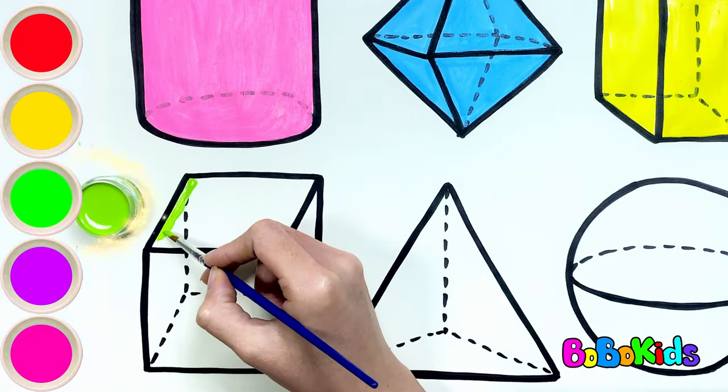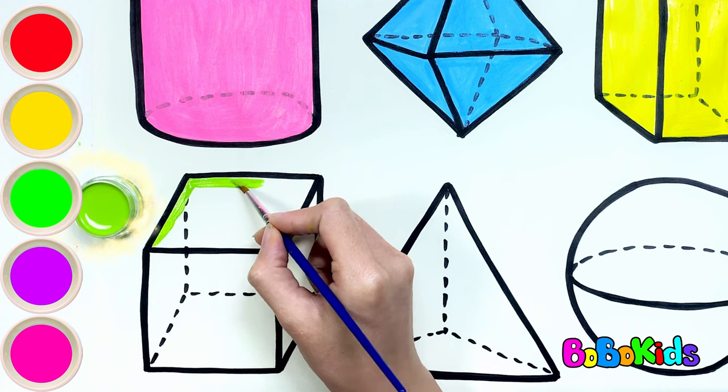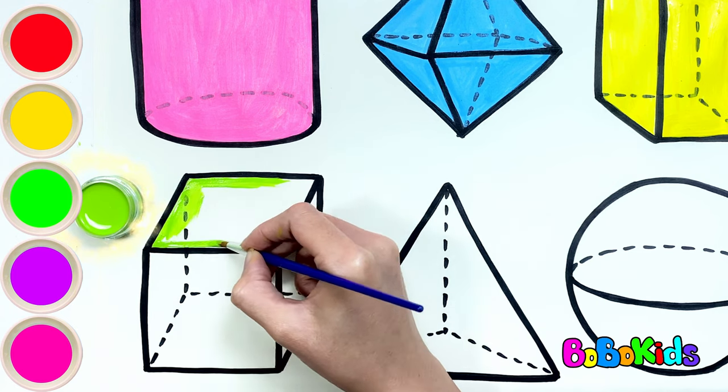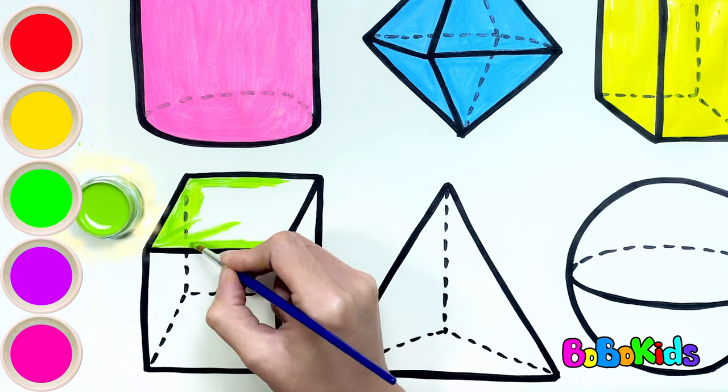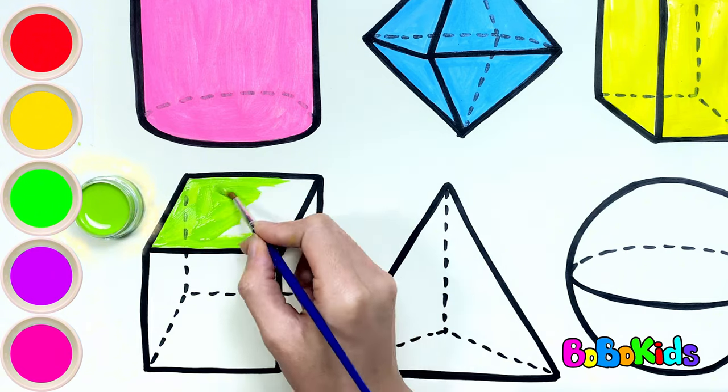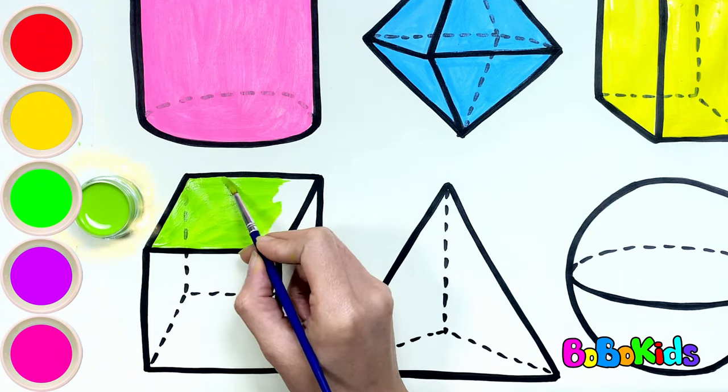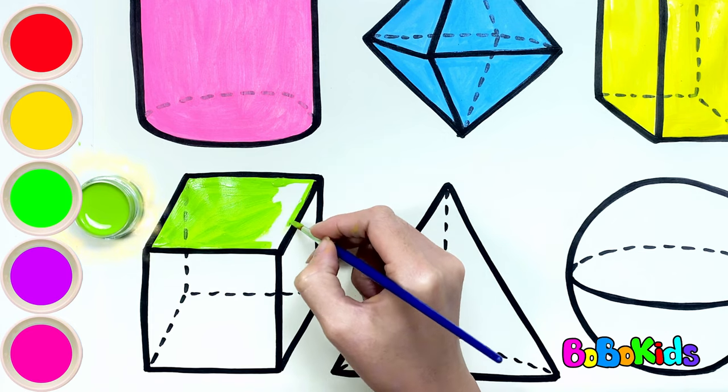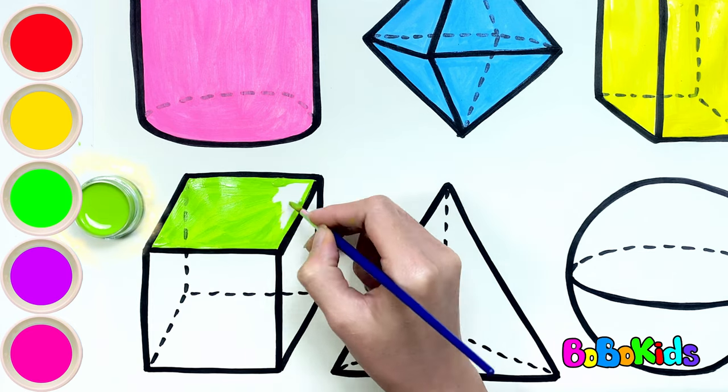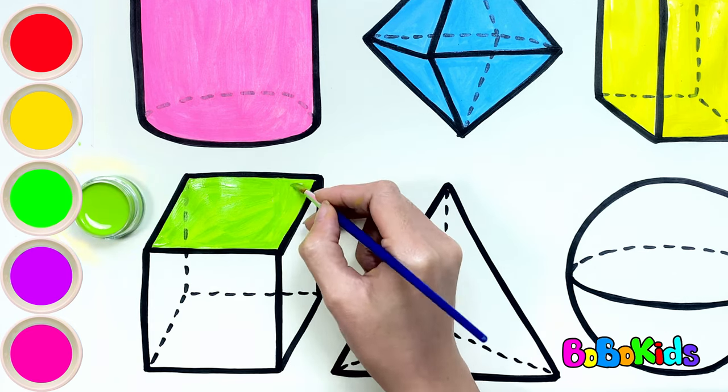Green. Do you know what shape Bobo is using green to color? This is a 3D square. Do you know a special characteristic of squares? That's right. They have all lines equal.